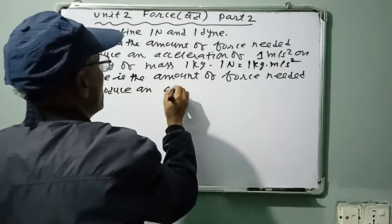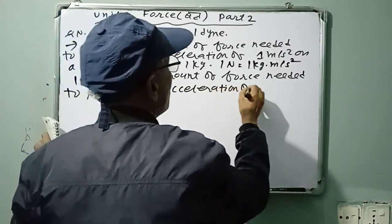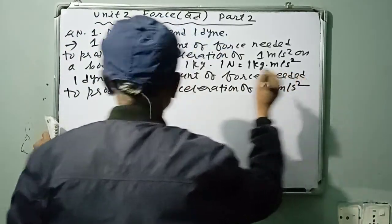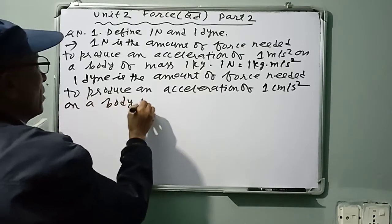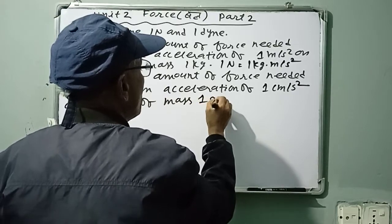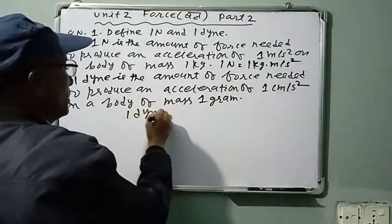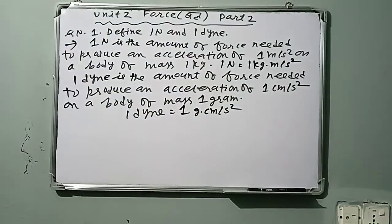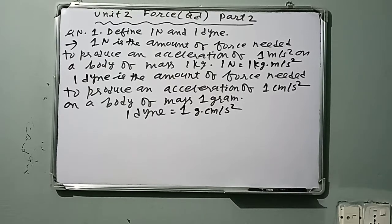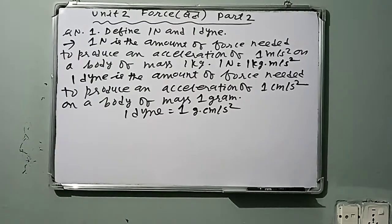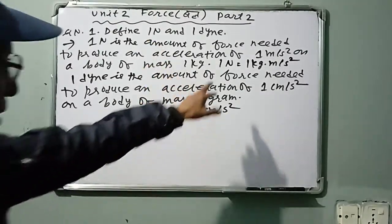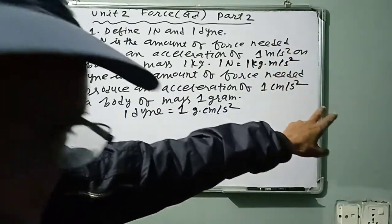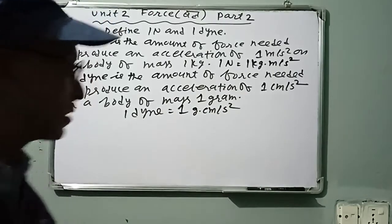One Dyne is the amount of force needed to produce an acceleration of one centimeter per second squared on a body of mass one gram. So: one Newton equals one kilogram meter per second squared, and one Dyne equals one gram centimeter per second squared.